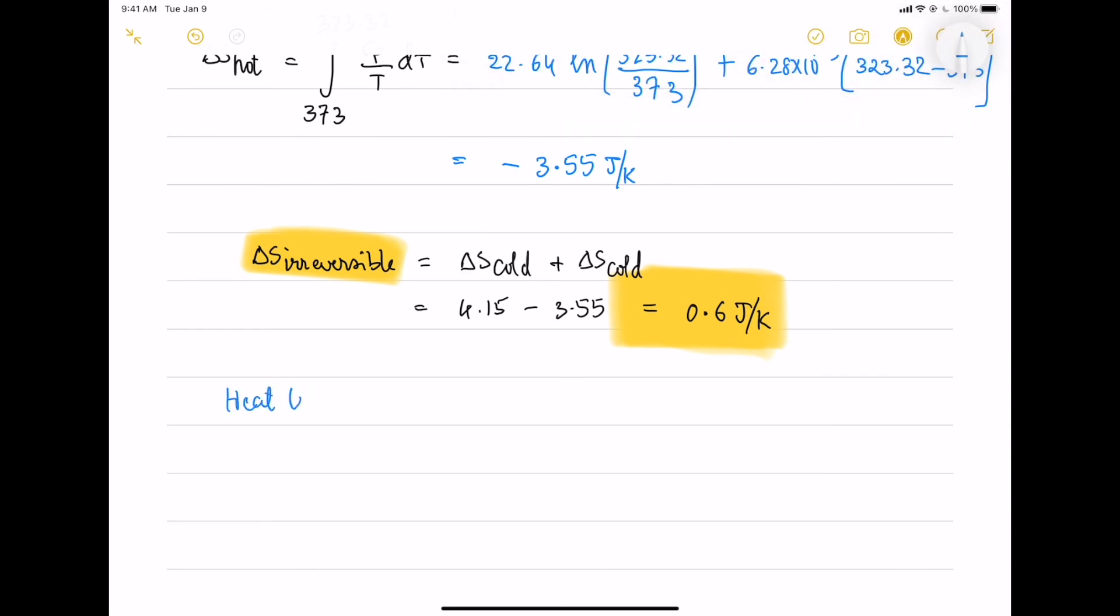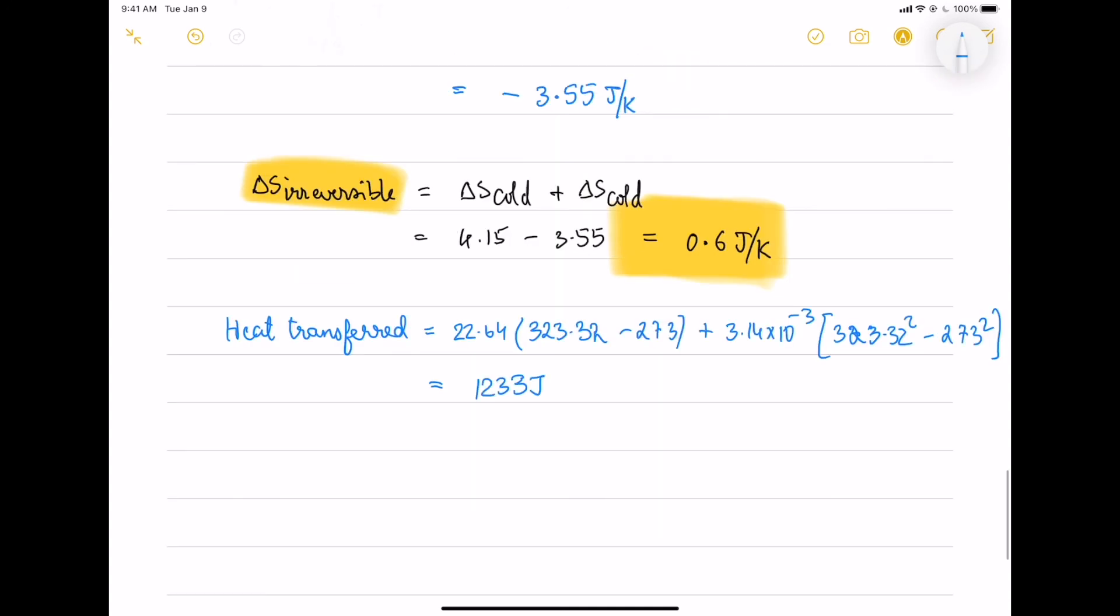For the heat transfer, you already know, you can either use hot or cold or delta H. I take delta H of cold and input the final temperature in the equation above and get 1233 Joules.